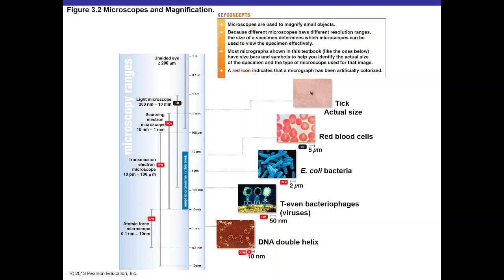DNA can be seen with the atomic force microscope. Bacteriophages — viruses that attack bacteria — at 15 nanometers in size can be seen with the transmission electron microscope. Bacteria such as E. coli, which are 2 micrometers in length, can be seen in great detail with the scanning electron microscope, but also with the transmission electron microscope or the light microscope. In this course, you will learn about the bacterial world using the compound microscope.